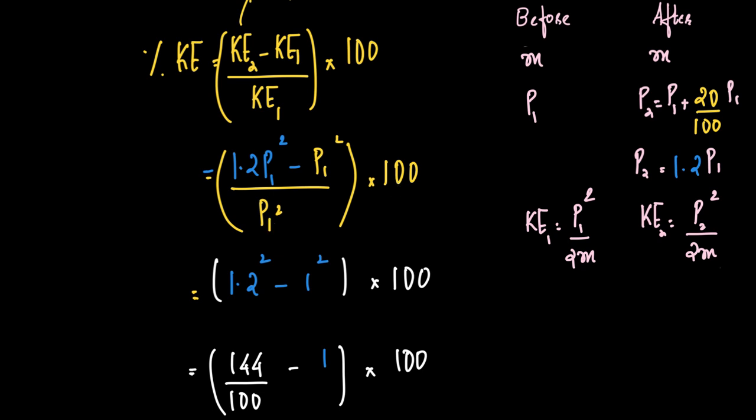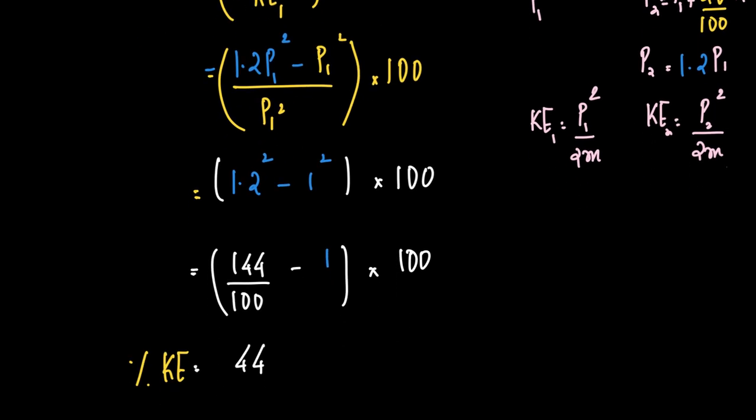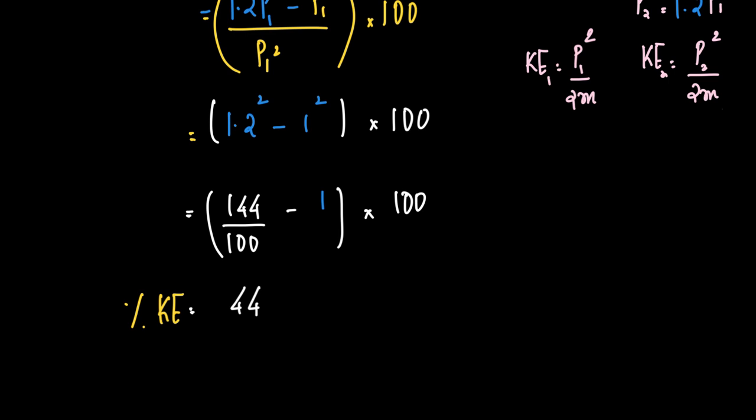If you divide this complete equation by P1 squared, what we have is 1.2 squared minus 1 squared into 100. What is 1.2 squared? 1.2 can be written as 12 by 10, the whole squared, which is equal to 12 squared, 144 by 100 minus 1. 144 minus 100 is 44. So that becomes 44 by 100 into 100. Therefore, percentage change in kinetic energy is equal to 44.